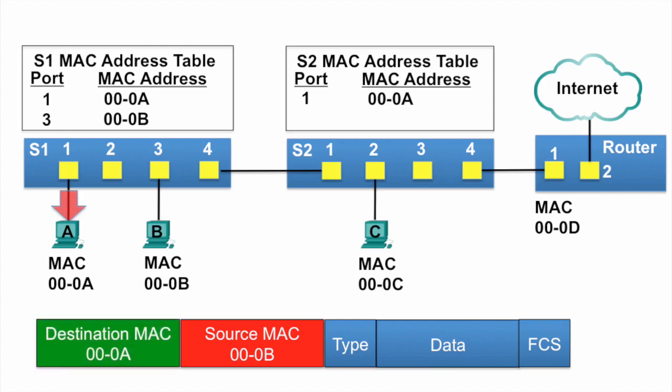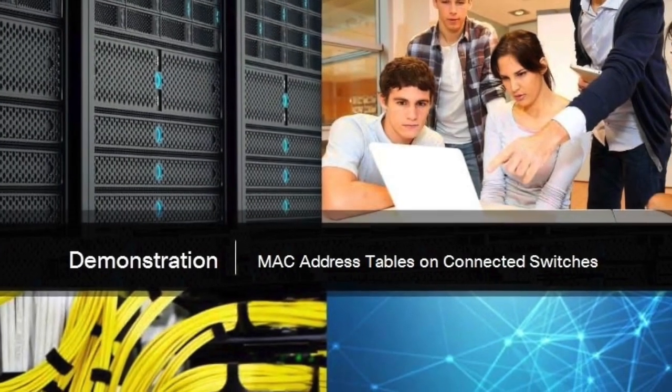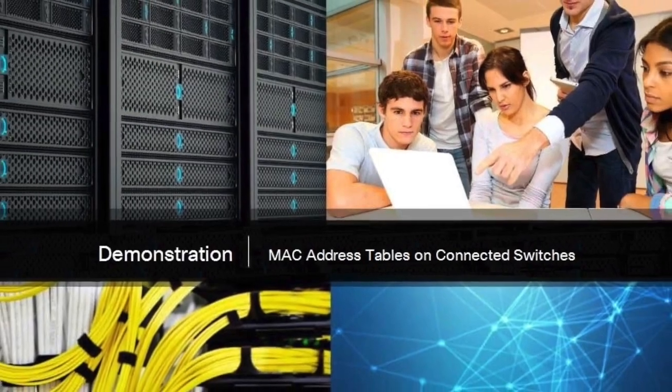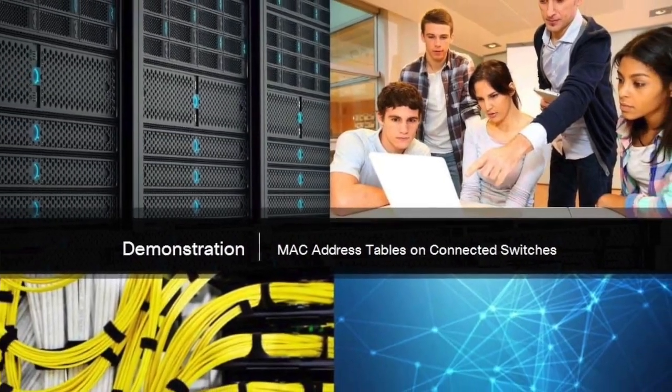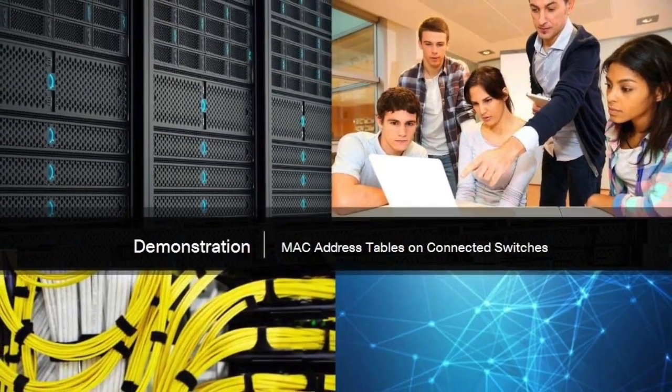PCA receives the Ethernet frame, examines the destination MAC address against its own MAC address, and notices it is a match, so it receives the rest of the frame. Thank you.